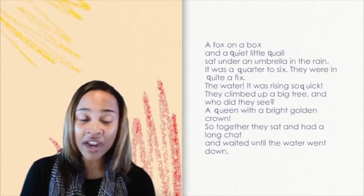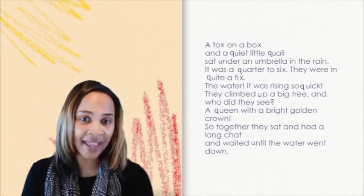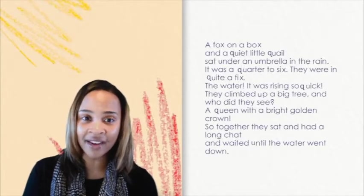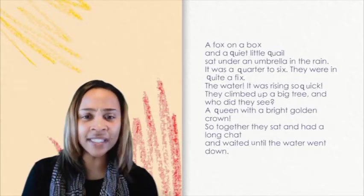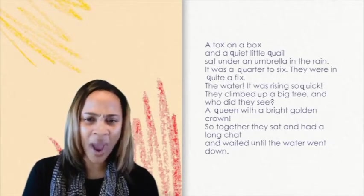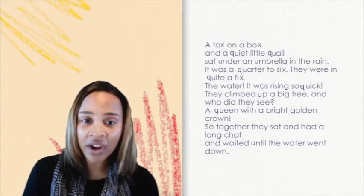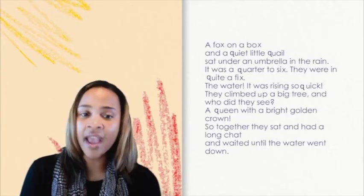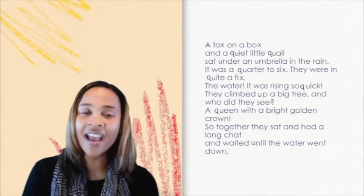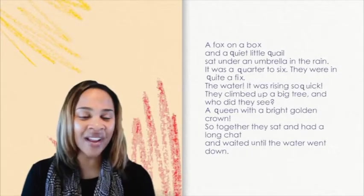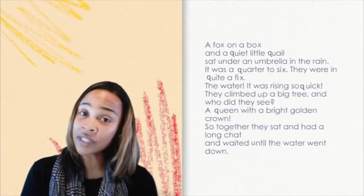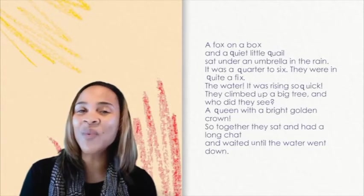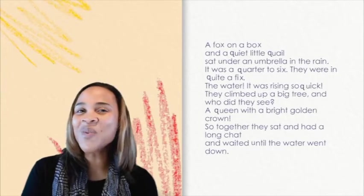A fox on a box and a quiet little quail sat under an umbrella in the rain. It was a quarter to six. They were in quite a fix. The water, it was rising so quick. They climbed up a big tree and who did they see? A queen with a bright golden crown. So together they sat and had a long chat and waited until the water went down.